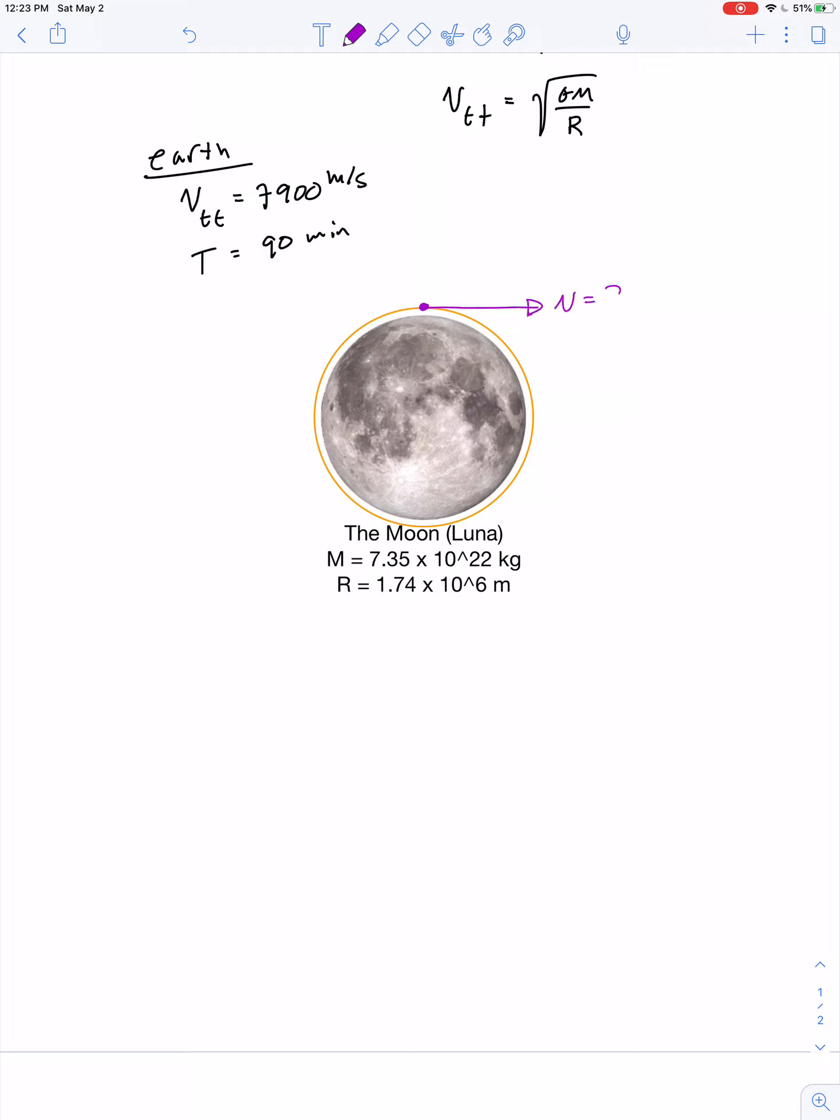How fast would it have to travel? How long would it take to complete one orbit? So all we need to do is apply this equation. The mass and the radius of the moon are given: 7.35 times 10 to the 22nd kilograms and 1.74 times 10 to the 6th meters, both values clearly less than that of the earth. The velocity of a treetop orbit for the moon is the square root of 6.67 times 10 to the negative 11th newton meter squared per kilogram squared multiplied by 7.35 times 10 to the 22nd kilograms. Let's see if we can come up with the final answer: 1.74 times 10 to the 6th meters.